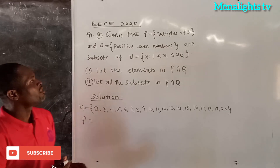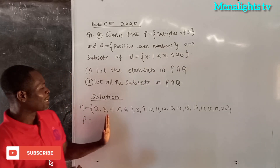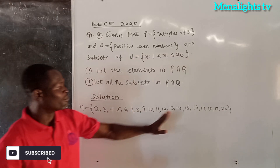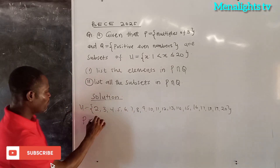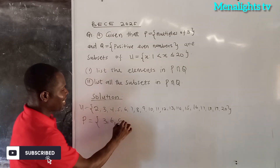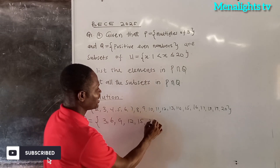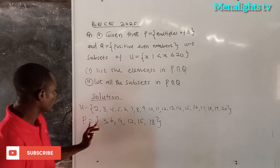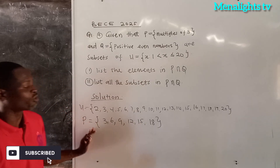P is multiples of 3. Since P is a subset of U, the multiples of 3 must come from the mother set U. So the multiples of 3 here are 3, 6, 9, 12, 15, and 18. So these are the members of P.